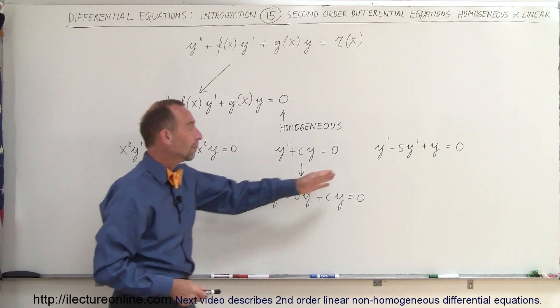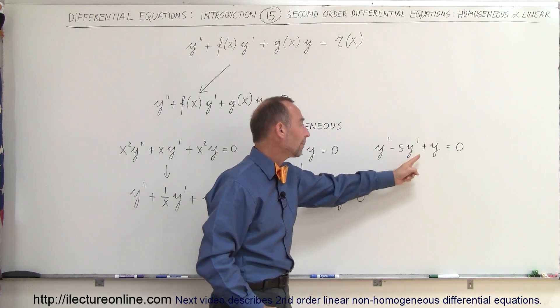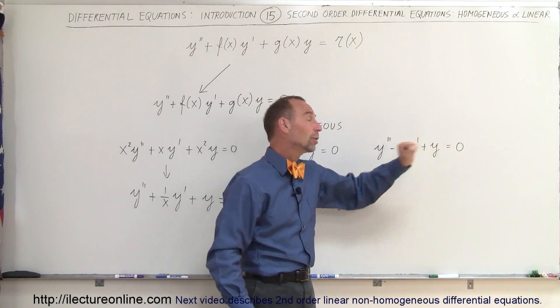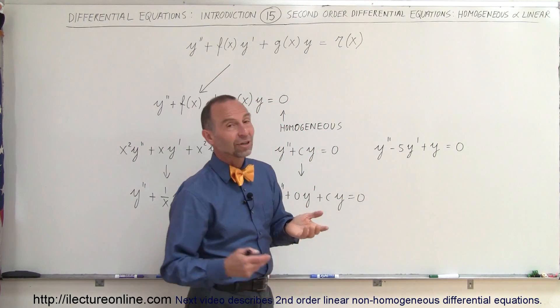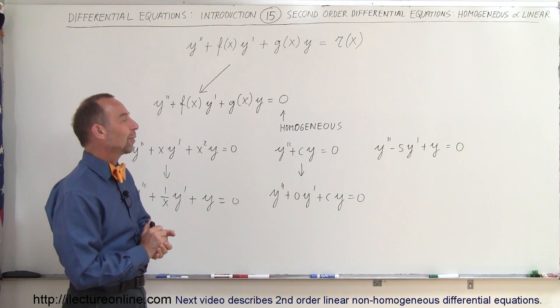And of course here is a typical example of what that may look like. It's a linear equation, it has the y double prime, the y prime and the y, three terms right there. It's homogeneous because it's set equal to zero. It's linear, second-order, so we call it a linear second-order homogeneous differential equation.